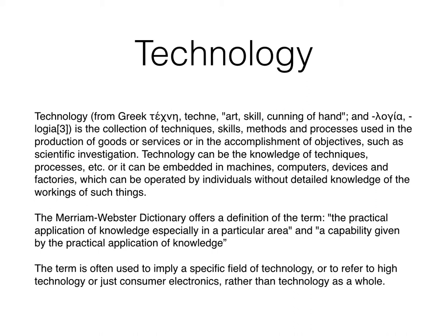W. Brian Arthur defines technology in a similarly broad way as a means to fulfil a human purpose. The word technology can refer to a collection of techniques — the current state of humanity's knowledge of how to combine resources to produce desired products, solve problems, fulfil needs or satisfy wants. It includes technical methods, skills, processes, techniques, tools and raw materials. When combined with another term such as medical technology or space technology, it refers to the state of that field's knowledge and tools. State-of-the-art technology refers to the most complex technology available to humanity in any given field.